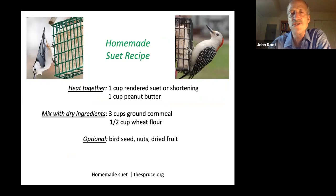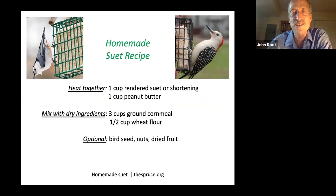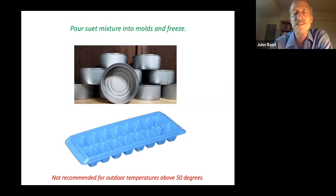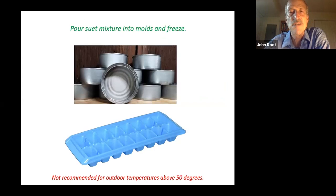You can make suet with suet or shortening and peanut butter — heat them together and then add the dry ingredients. You really only need the shortening and cornmeal for a simple suet recipe; these other things are optional. Please don't leave it out above 50 degrees — it'll turn rancid. Once you have that mixture, simply freeze it in molds such as an old tin can or an ice cube tray. After a couple of hours, it's frozen and you can put it in your suet feeder.